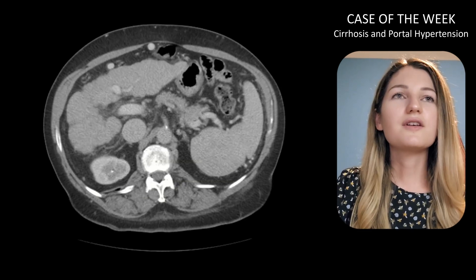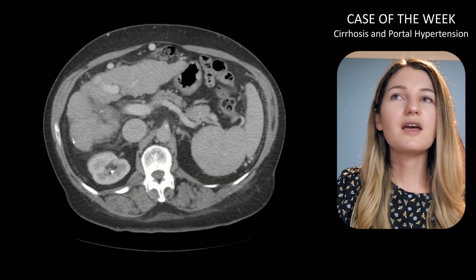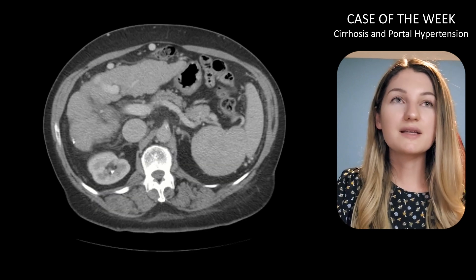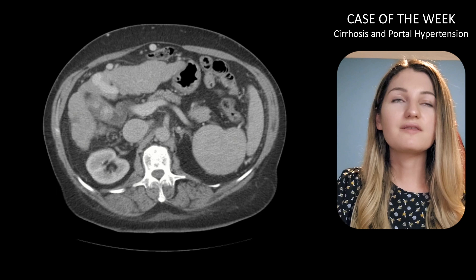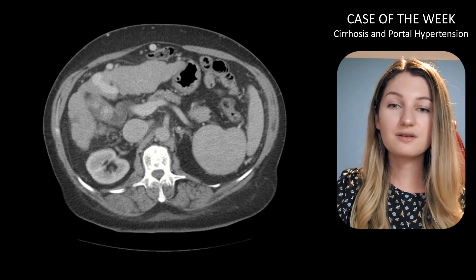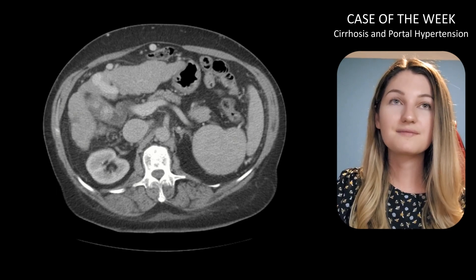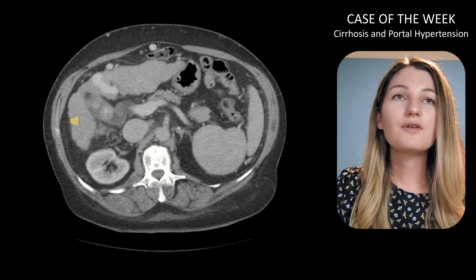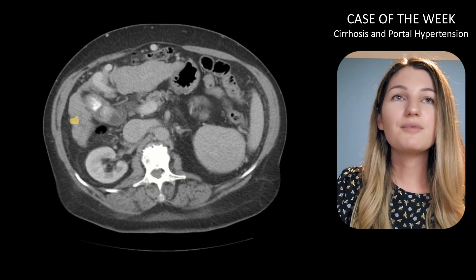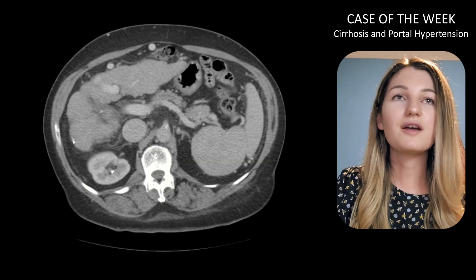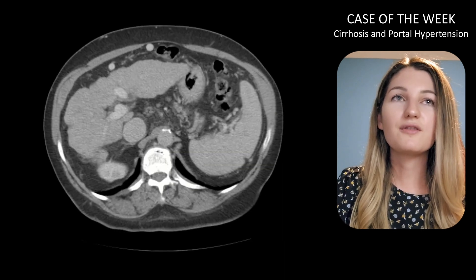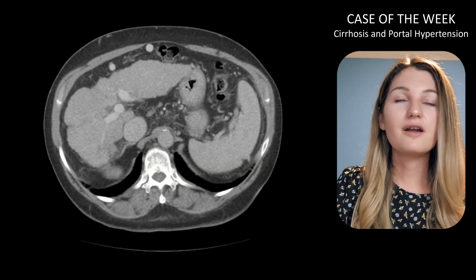First we'll scan our liver for evidence of any abnormal areas of enhancement or hepatic masses. Any mass in the cirrhotic liver should be considered hepatocellular carcinoma until proven otherwise. Luckily there are no hepatic masses here — just a focal wedge-shaped hypodensity in the periphery of the right hepatic lobe, which is just a bit of focal fibrosis, not a mass.